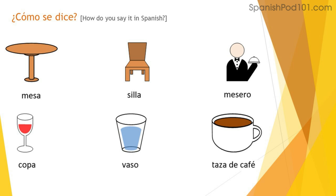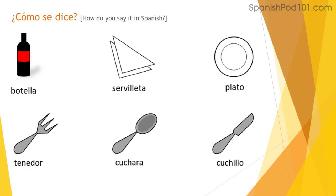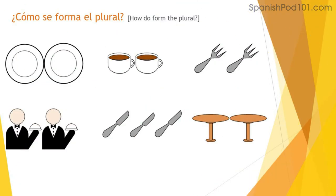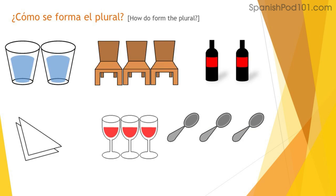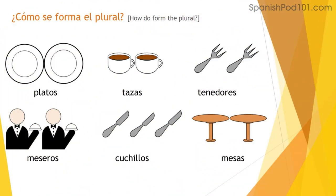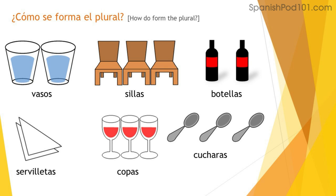Let's practice vocabulary: mesa, silla, mesero, copa, vaso, taza de café, botella, servilleta, plato, tenedor, cuchara, cuchillo. Now, the plural forms: platos, tazas, tenedores, meseros, cuchillos, mesas, vasos, sillas, botellas, servilletas, copas, cucharas.